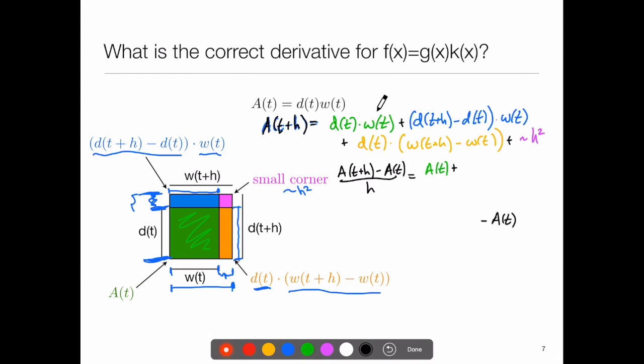Now I'll subtract off minus A of t at the very end, and in the meantime I'll put in these other expressions. So d of t plus h minus d of t times w of t, plus d of t times w of t plus h minus w of t, plus something that goes like h squared.